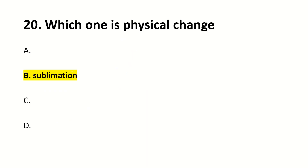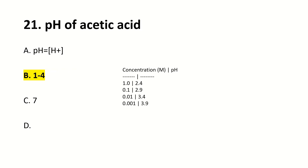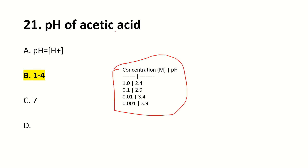Which one is a physical change? Right answer is sublimation. pH of acidic solution is 1 to 4 — pH of 1 to 4 is acidic.